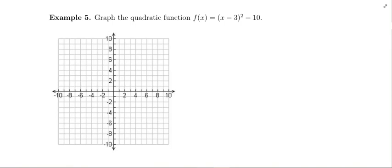The last example in this section is example five. It's different from the ones we've done previously in this section. I want you to imagine that this question were on an exam. I want to know how you would answer it or how you would approach it. So example five says graph the quadratic function f(x) equals (x minus 3) quantity squared minus 10. Take a minute and think about what you would do here.